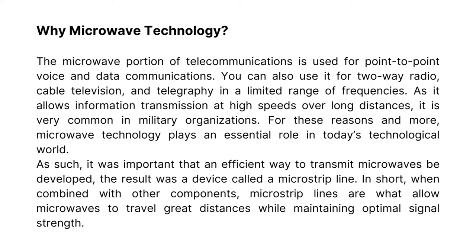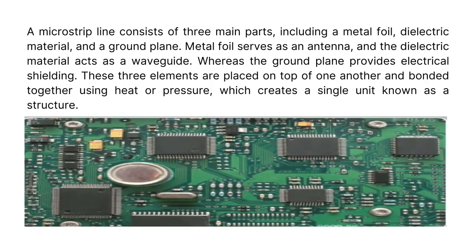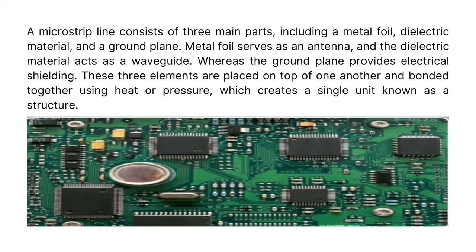When combined with other components, microstrip lines are what allow microwaves to travel great distances while maintaining optimal signal strength. A microstrip line consists of three main parts, including a metal foil, dielectric material, and a ground plane. Metal foil serves as an antenna, and the dielectric material acts as a waveguide, whereas the ground plane provides electrical shielding. These three elements are placed on top of one another and bonded together using heat or pressure, which creates a single unit known as a structure.